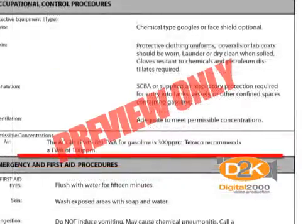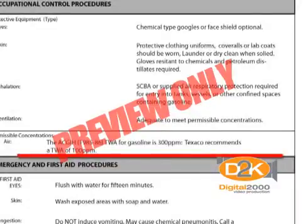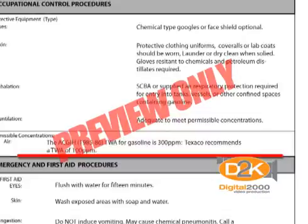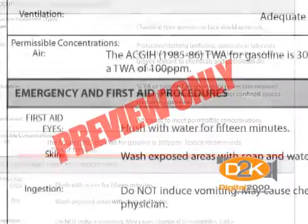The permissible concentrations are listed next in technical terms explaining the time-weighted average for gasoline, which is 300 parts per million. The manufacturer, however, recommends 100 parts per million. The MSDS also lists emergency and first aid procedures, such as: if the chemical is exposed to the eyes, flush with water for 15 minutes. Wash exposed areas of skin with soap and water.